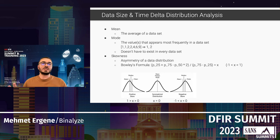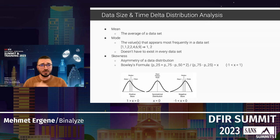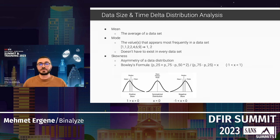Skewness measures the asymmetry of a data distribution. If the majority of values are skewed toward one side, the distribution is not symmetric. One formula for this is Bowley's formula, which uses the 25th, 50th, and 75th percentiles and produces a result between -1 and 1. When the result is between 0 and 1, the distribution is positively skewed; at 0 it's symmetrical; between -1 and 0 it's negatively skewed.